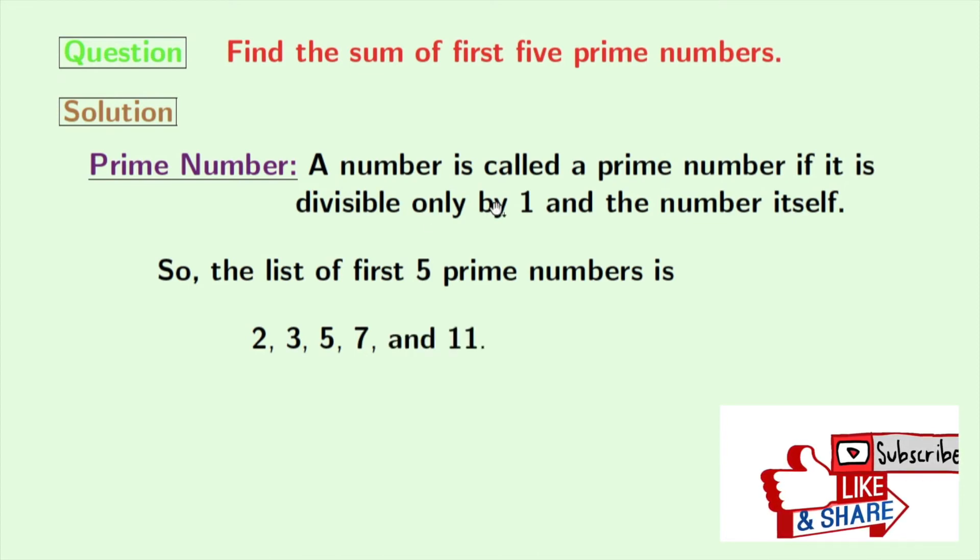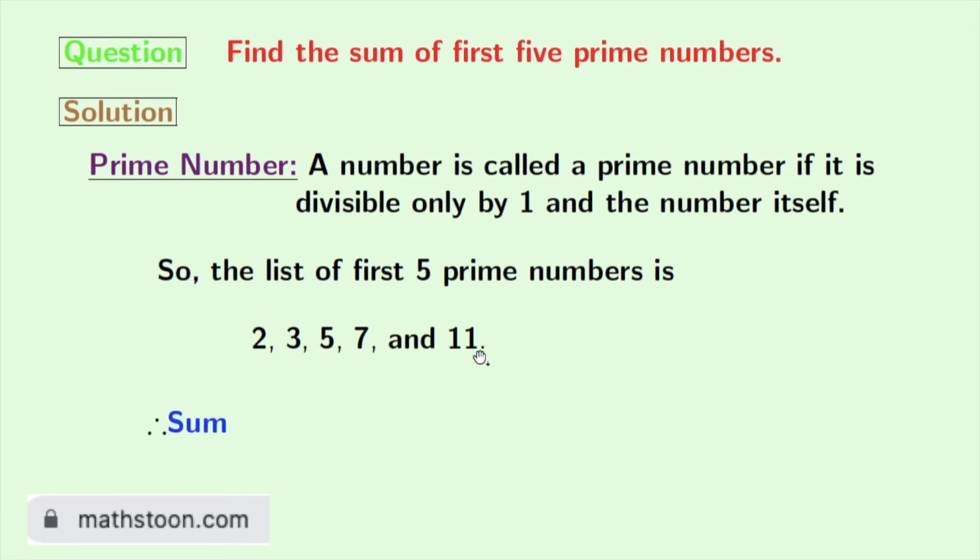So the sum of the first five prime numbers will be the sum of these numbers. So we have 2 plus 3 plus 5 plus 7 plus 11.